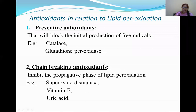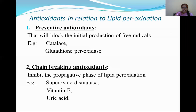Chain-breaking antioxidants — superoxide dismutase, vitamin E, and uric acid — inhibit the propagative phase of lipid peroxidation. Catalase and glutathione peroxidase are examples of preventive antioxidants, while superoxide dismutase, vitamin E, and uric acid are examples of chain-breaking antioxidants.